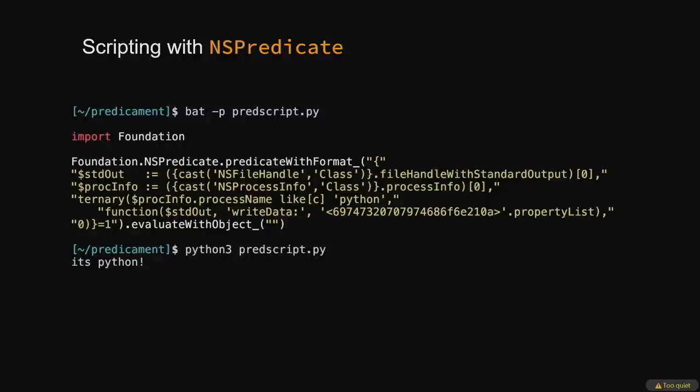Here's a PyObjC script — Python bindings for Objective-C — that evaluates an NSPredicate script. This script creates two variables: a file handle for standard out and a reference to process information, both instantiated using the cast class trick. It then uses a ternary expression as an if statement — if the process name is Python, it prints 'Python' to standard out. All these expressions are wrapped in brackets to form a single NSAggregate expression, with each line evaluated sequentially.